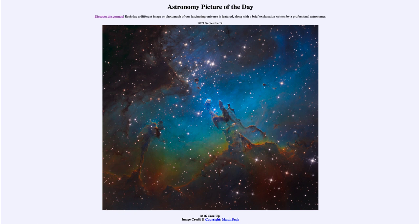Today's picture for September 9th of 2021 is titled M16 Close Up. So what do we see here? This is M16, known as the Eagle Nebula, and we can see a great bit of detail here looking at gas and dust and stars.